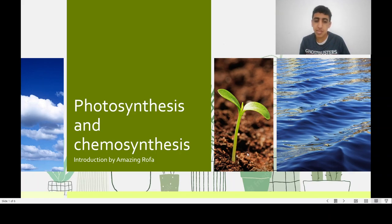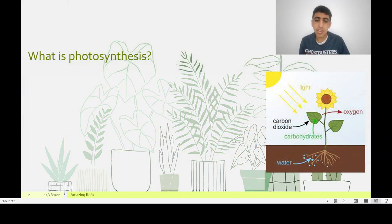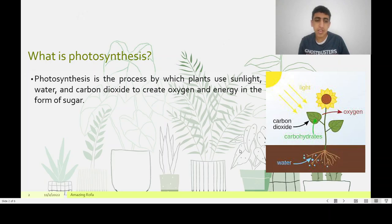Photosynthesis and Chemosynthesis. What is Photosynthesis? Photosynthesis is the process by which plants use sunlight, water, and carbon dioxide to create oxygen and energy in the form of sugar.